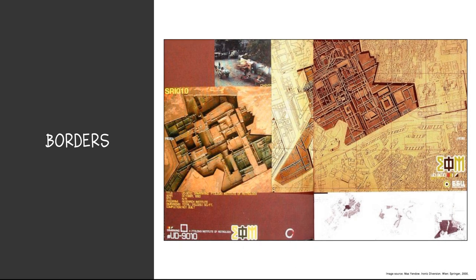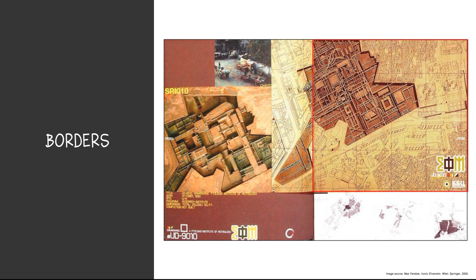This image by Mas Yendal retains the borders of some images while blurring the boundaries of others. To add interest and a double meaning, the larger image on the right appears as a two-dimensional drawing of a map, while simultaneously appearing as if someone has excavated through the map to uncover a three-dimensional intervention below.